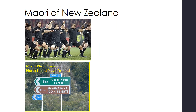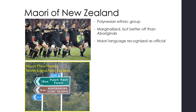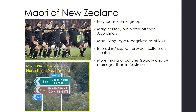This is a little different than the Maori of New Zealand. They are a Polynesian ethnic group — they are marginalized, but they are generally better off than aboriginals in Australia. Maori language is recognized as an official language in New Zealand, and there is more interest in and respect for Maori culture, which is on the rise. You can see signs where place names are both in English and in Maori. There has also been more mixing of cultures, both socially and by marriage, than in Australia, where aboriginals have remained mostly separate from other populations.